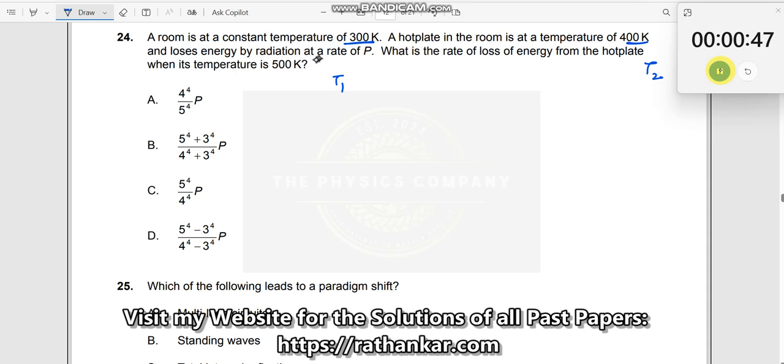And it loses energy by radiation at a rate of P. Definitely it has to lose energy because this is the higher temperature and this is the lower temperature. Energy should be lost by radiation. What is the energy lost? Energy lost is given by P equals sigma A times T to the power of 4. Which T should be used?